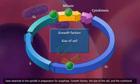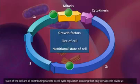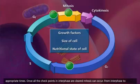Growth factors, the size of the cell, and the nutritional state of the cell are all contributing factors in cell cycle regulation, ensuring that only certain cells divide at appropriate times.